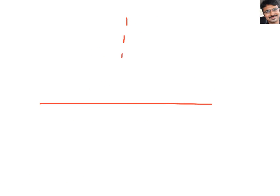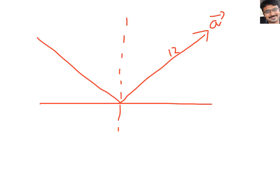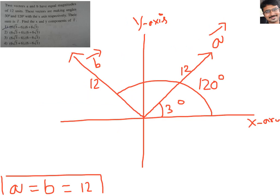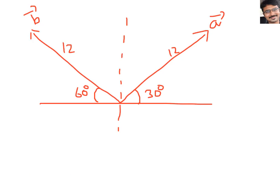So let me draw this now. This is A bar with magnitude 12, and this is B bar with magnitude 12. The angle here is 30 degrees and the angle on the other side is confirmed as 60 degrees, because B bar makes 120 degrees with the x-axis and the total straight angle is 180 degrees. Now we learnt about resolving a vector into its components.